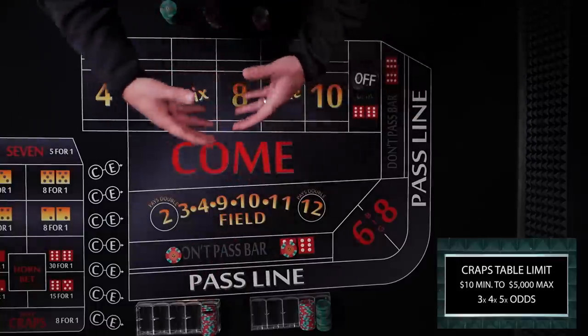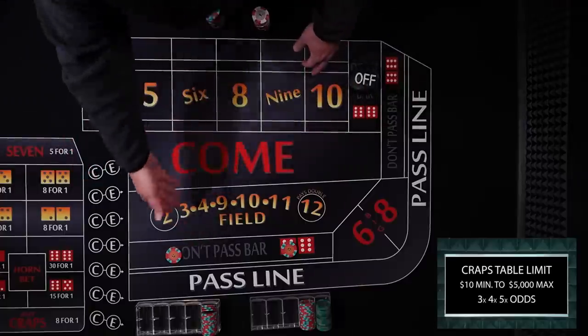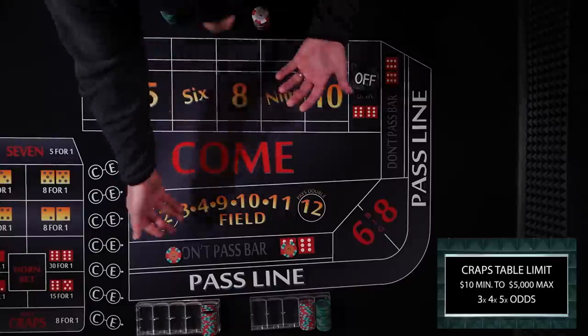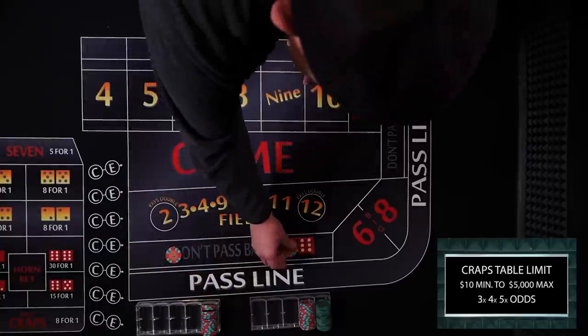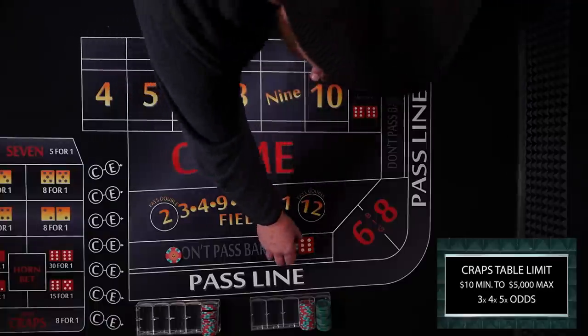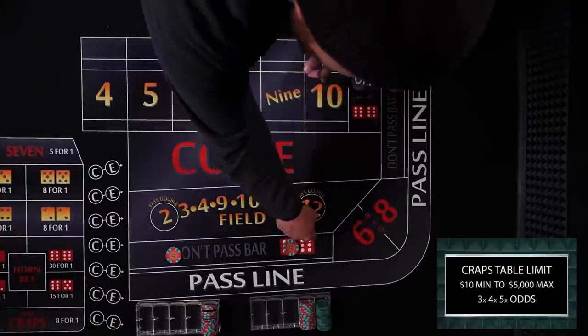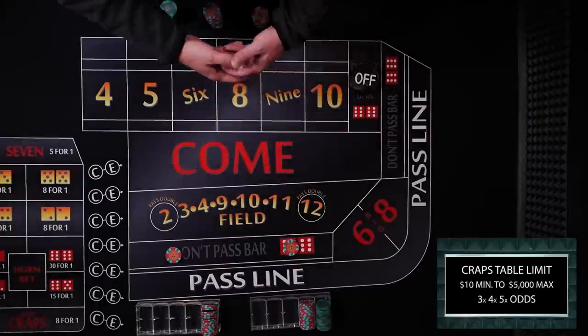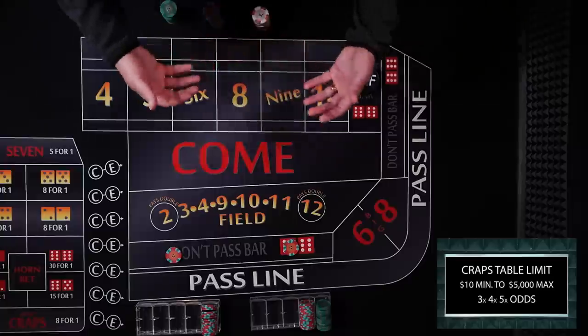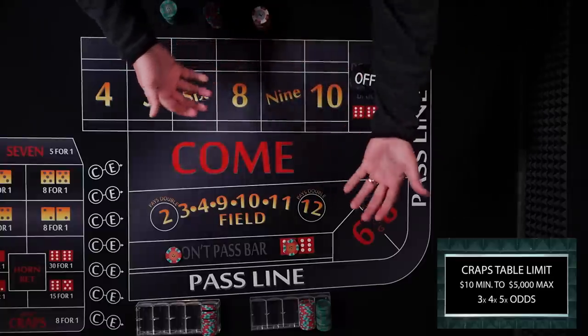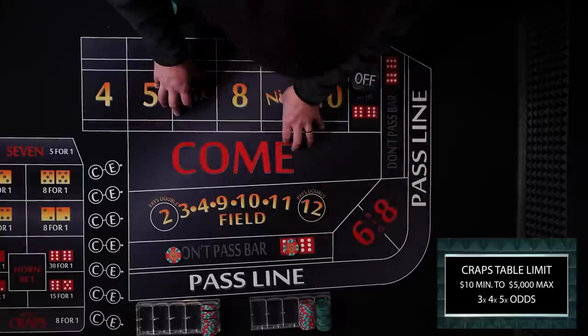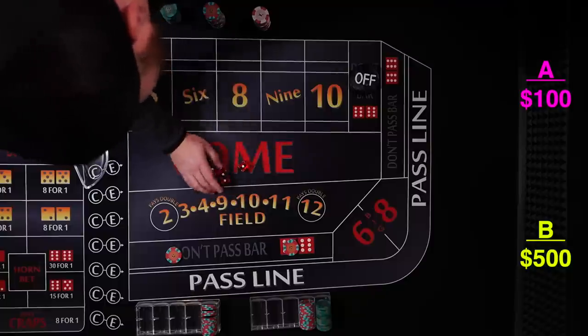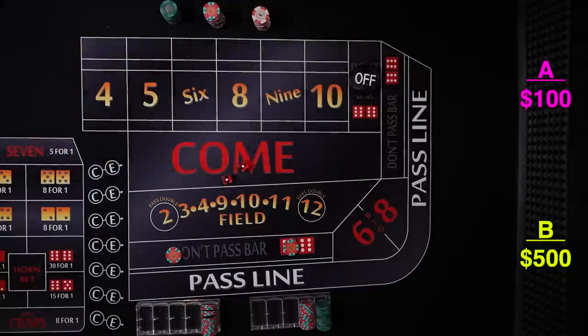Actually both of these players I don't really think has enough bankroll. This player could potentially have $20 at risk per shooter. So really to even last 10 shooters he needs $200. And this player at a 3, 4, 5 times table he's going to back each $10 bet up with $60 in odds. So $70 once he establishes another point $140. So to even have enough bankroll for 10 shooters he really should have a bankroll of approximately $1400. And I only have $500 right now. We'll just do a short little roll, see how long it lasts until one of them runs out of money.